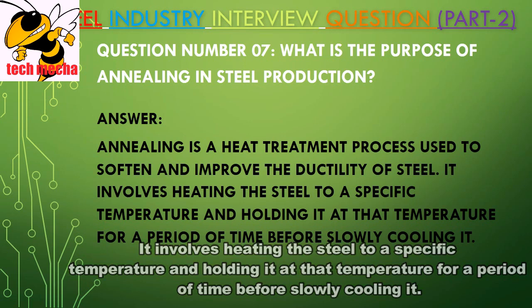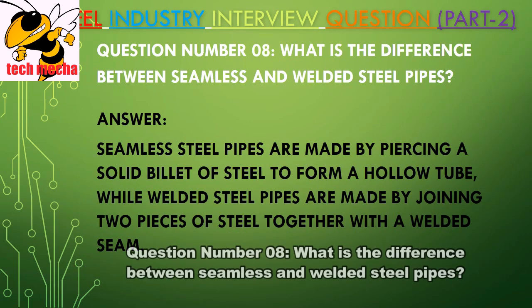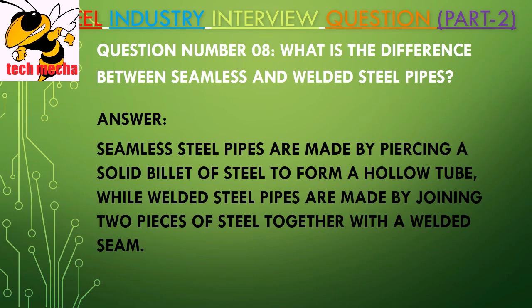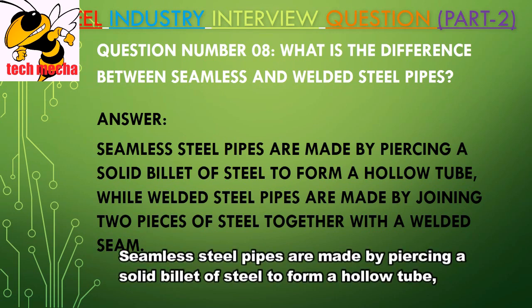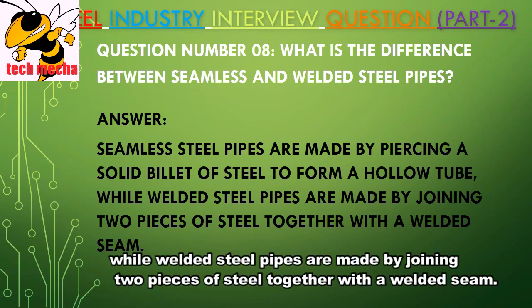Question Number 08: What is the difference between seamless and welded steel pipes? Answer: Seamless steel pipes are made by piercing a solid billet of steel to form a hollow tube, while welded steel pipes are made by joining two pieces of steel together with a welded seam.